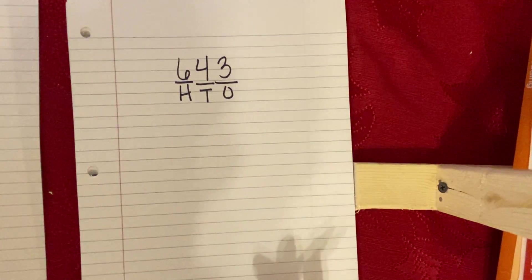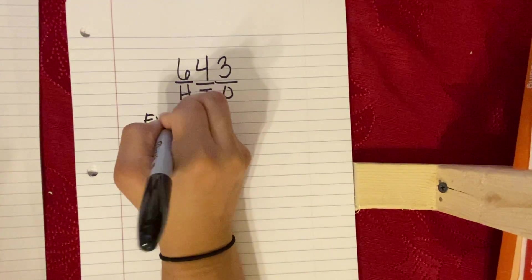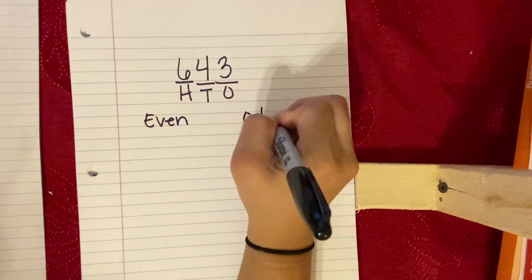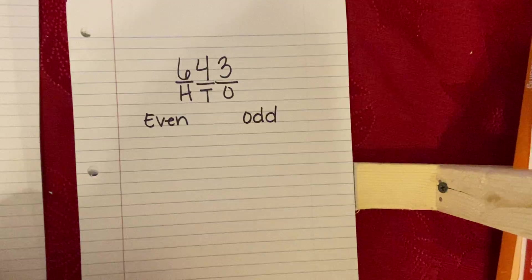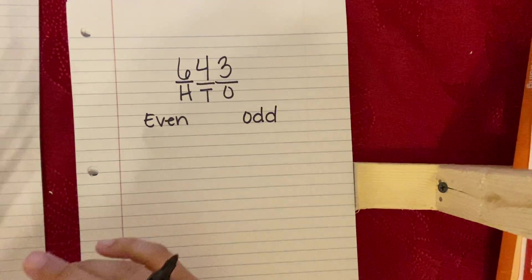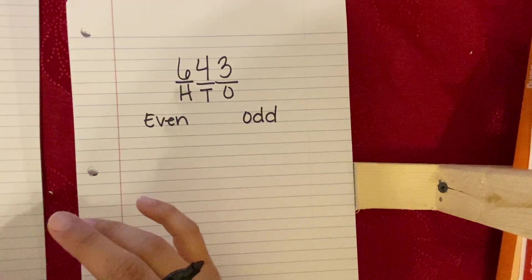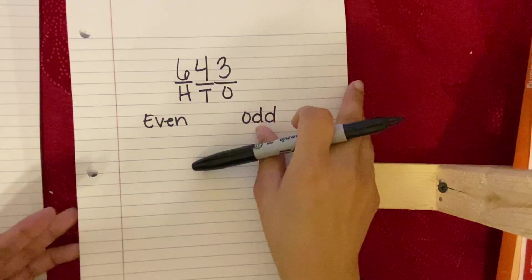The second thing you do is, is that number even or odd? And how do you know? Well, if you remember from class, an even number is a number that can be divided into two equal groups. An odd number is a number that cannot be divided into two equal groups.